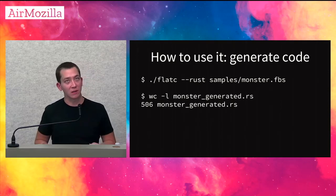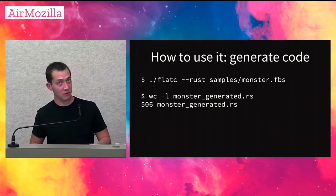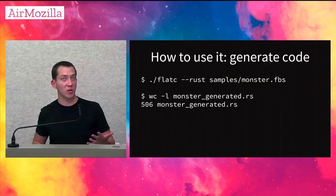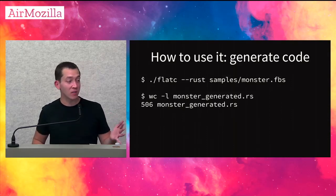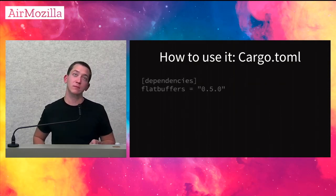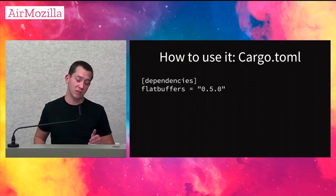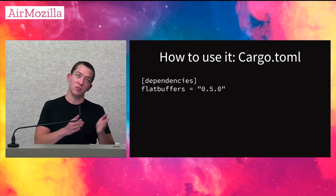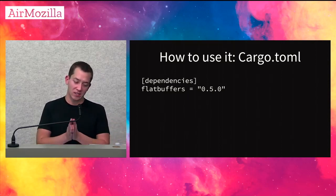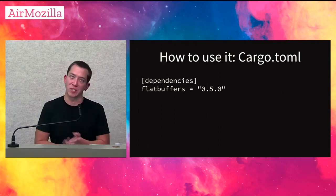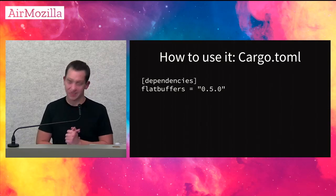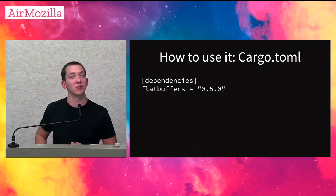We can use this file with the flatc compiler and the Rust flag to generate code. The generated file is about 500 lines relative to the schema input, but it contains everything needed to read and write data in many different scenarios. To use it in your code after generating, add this to your Cargo.toml. We're currently at version 0.5.0 — I expect quick progression throughout the next 12 months since this is still an early-stage port.